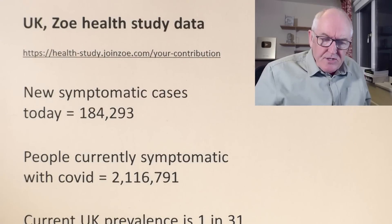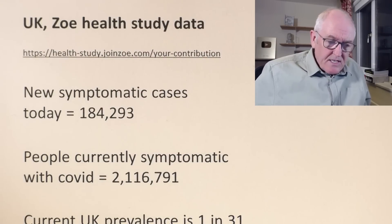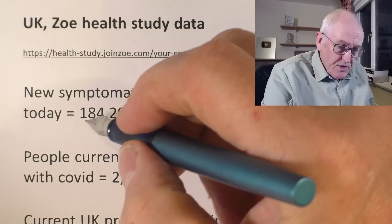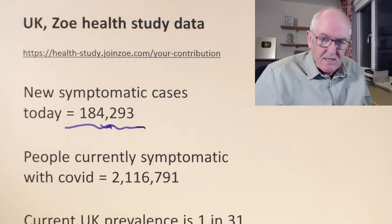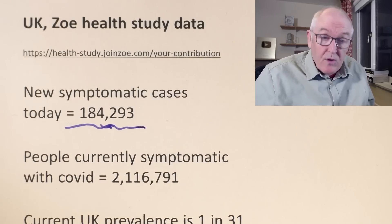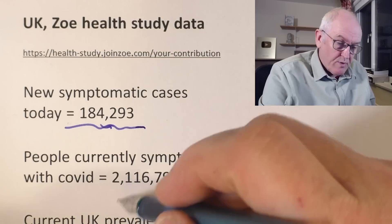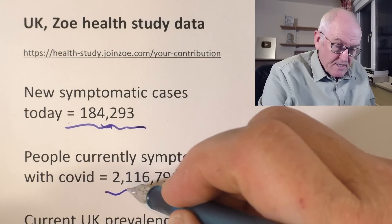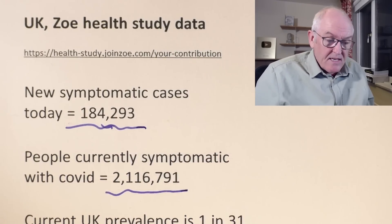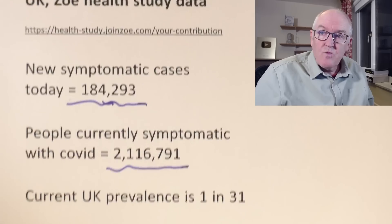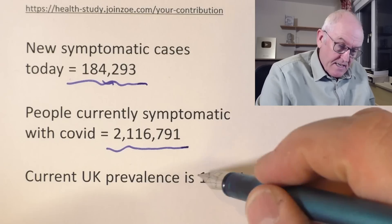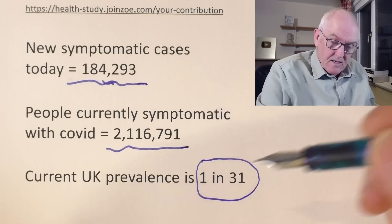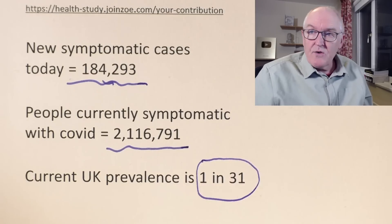New symptomatic cases in the UK are still pretty high — 184,000 new symptomatic cases. So that's the incidence, the number of new cases. The people currently with the infection: 2.1 million — that is the prevalence. And according to the ZOE data, that gives us 1 in 31 people currently symptomatic in the UK. So that's the ZOE estimate.